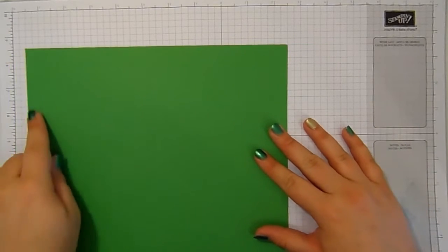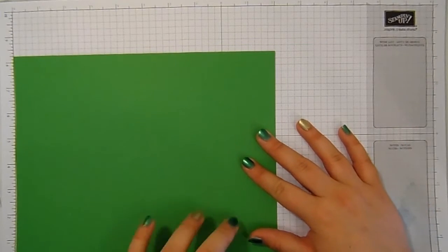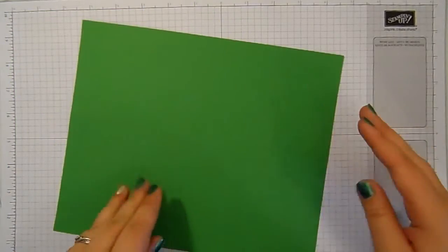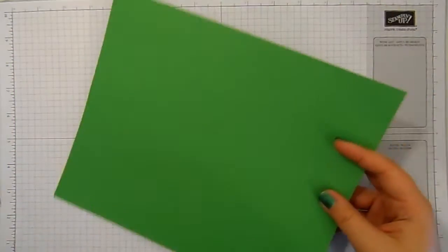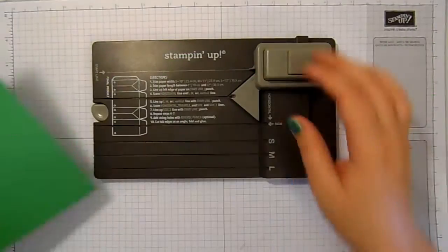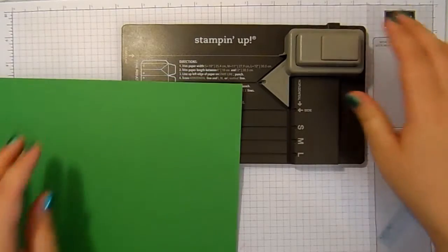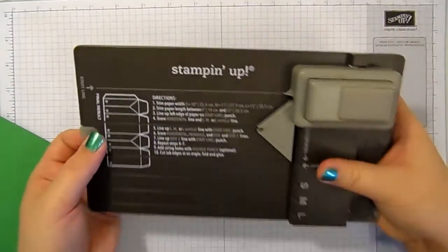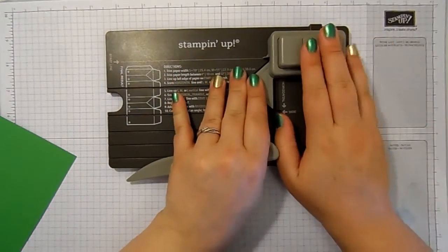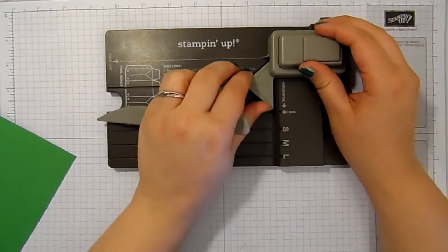So this is a piece of Cucumber Crush that measures ten inches by eight and a quarter, which is an A4 piece cut down to ten inches. And I've got my gift bag punch board here. I love this punch board. I think this one is almost as versatile as the envelope punch board.